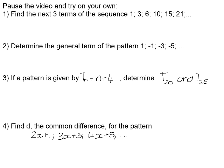In your booklet there are examples to try — pause the video and try these on your own. Number 1: find the next 3 terms of the sequence 1, 3, 6, 10, 15, 21. Filling in position numbers, you can recognise this as a sequence of triangular numbers; we're looking for terms 7, 8, and 9. Term 7: 21 + 7 = 28. Term 8: 28 + 8 = 36. Term 9: 36 + 9 = 45.